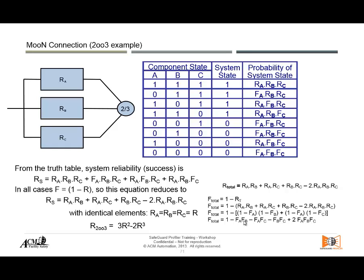The two-out-of-three is a special case — it sits in the middle of the tug-of-war between success and failure, giving the best of both worlds. From the Safeguard Profiler point of view, if all elements are the same we can group them into a simplified formula. However, we have not yet included the common cause factor — the beta factor — which must be added for both the 1oo2 and 2oo3 configurations.